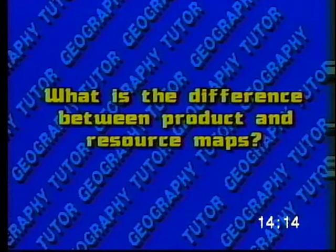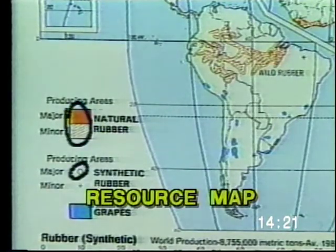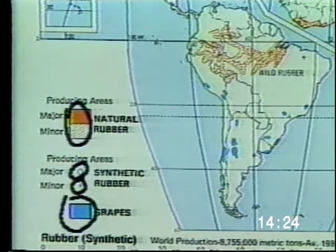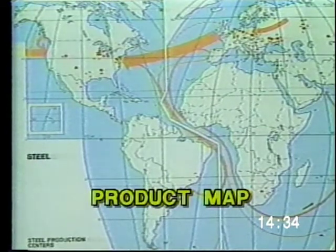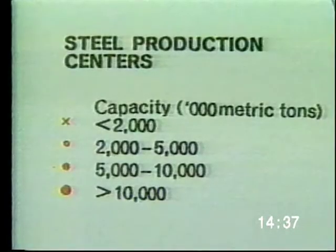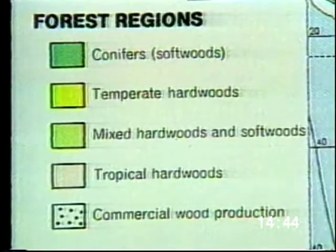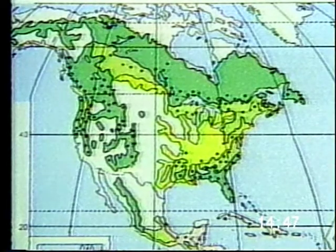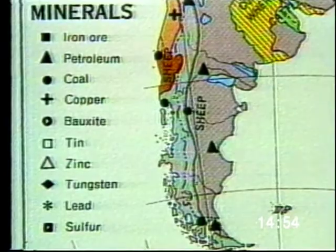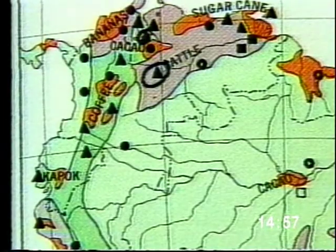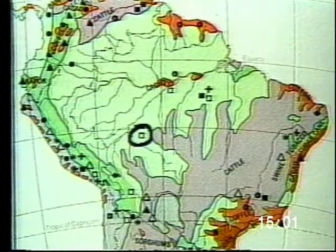What's the difference between product and resource maps? Both types of maps usually use symbols to show where resources are located and where products are manufactured. A resource map will identify where natural resources such as coal, iron, diamonds, or gold are found, while a product map shows where manufactured products such as steel or automobiles are produced. Some product and resource maps use colors instead of symbols to identify areas that are the source of raw materials or products. On this resource map of South America, we can see that Venezuela has a lot of oil, as does Ecuador. Bolivia is rich in tin and Brazil in diamonds.